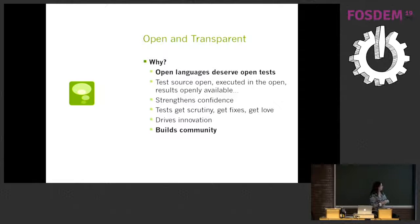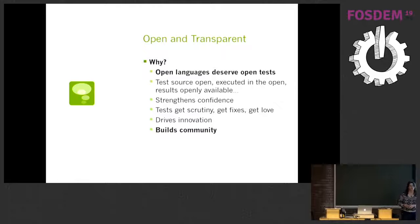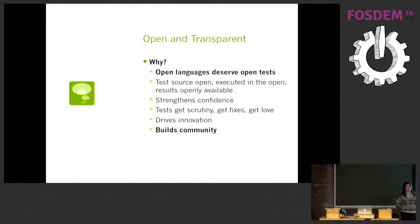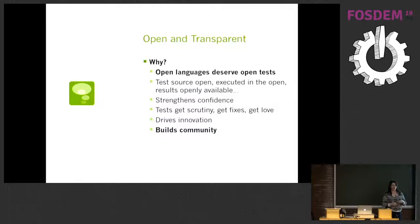Open and transparent: open languages deserve open tests. That means test source is open, tests are executed in the open, and results are openly available. This lets the community be confident in what we're doing because they can see it, scrutinize the tests, and provide fixes. Tests get loved when they're seen. It drives innovation — when things can be quickly fixed, you can make progress faster and add new tests more easily.